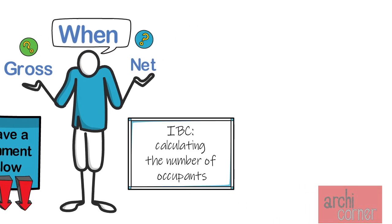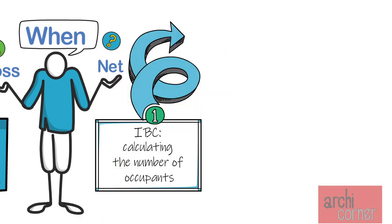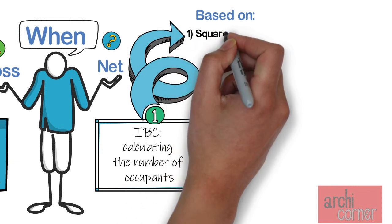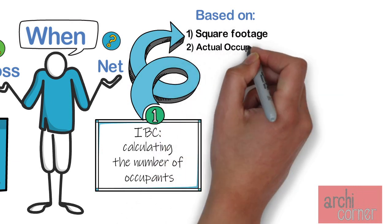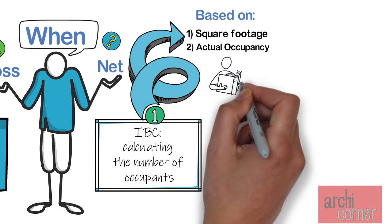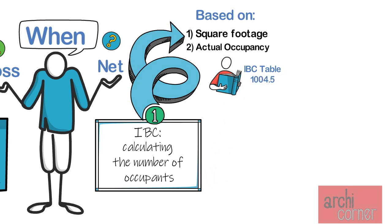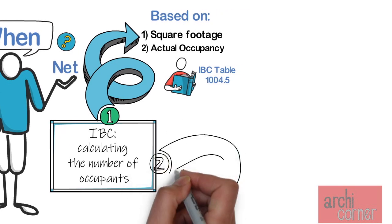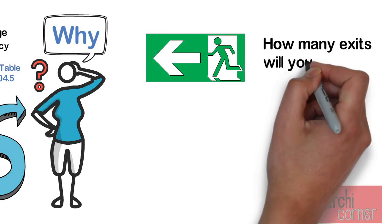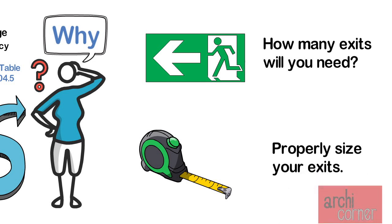Now that you know that net and gross square footages are mainly for occupancy calculation, let's get a few basic items out of the way. Item number one: occupancy loads are based on either square footage or actual occupancy. Most occupancies, with very few exceptions, are based on square footages — you need to look at Table 1004.5 in the IBC. Item number two: why is occupancy load even needed? There are two main reasons — one is to figure out how many exits you need, and two is to properly size your exits.